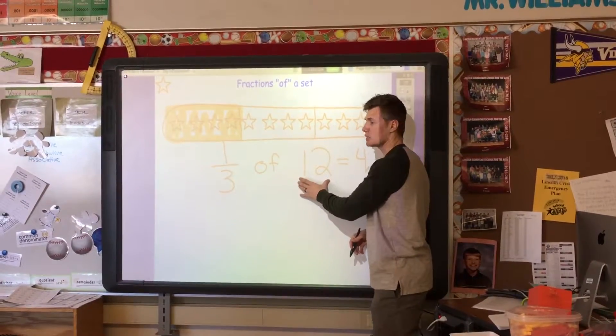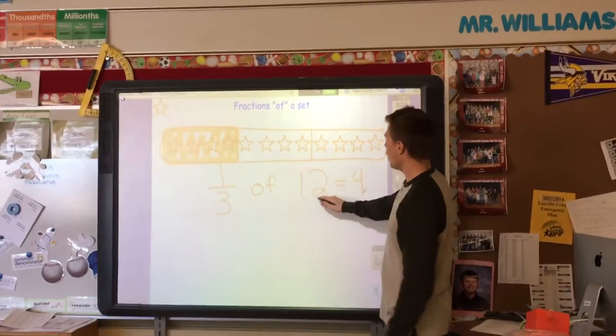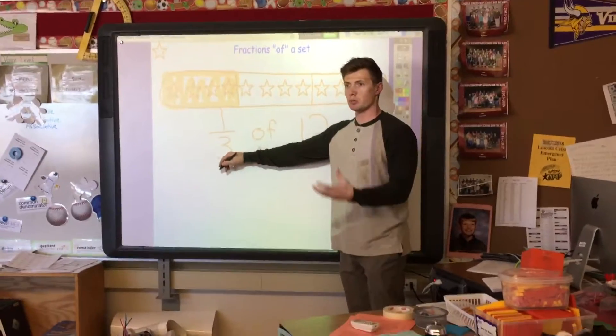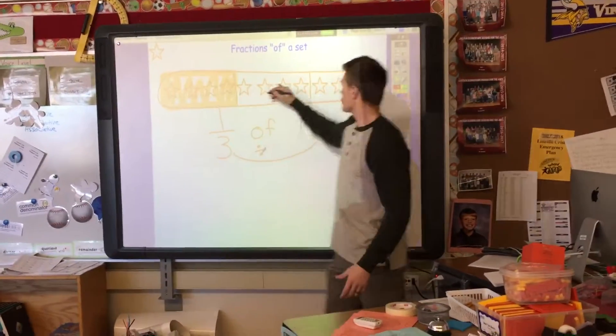Because you know that four is a part of twelve. So if that makes sense, we should be able to say all I'm doing is I'm breaking twelve into three equal groups. And in each group, there's four stars.